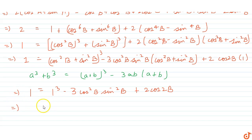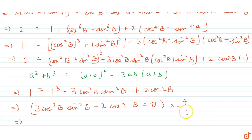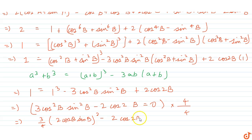This implies 3·cos²b·sin²b = 2·cos(2b). Now multiply and divide by 4: (3/4)·(2·cos b·sin b)² = 2·cos(2b). Since 2·cos b·sin b = sin(2b), we get (3/4)·sin²(2b) = 2·cos(2b).